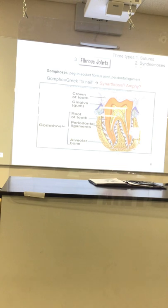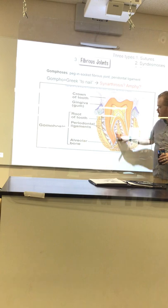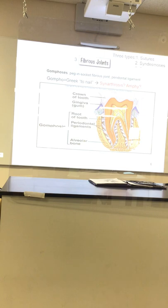Teeth don't move in a healthy body — your teeth are not supposed to wiggle. They have little ligaments holding them in place. There are conditions where if you don't take good care of your teeth, they start to fall out — periodontitis. Periodontitis is when the periodontal ligaments get inflamed and fall apart, so the teeth fall out. Take as good care of your teeth as physically possible.